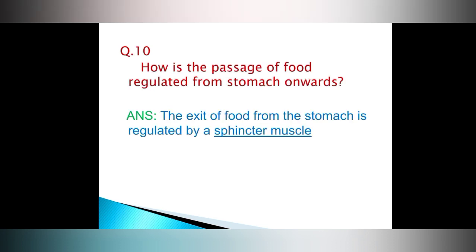Question number 10. How is the passage of food regulated from the stomach onwards? Answer. The exit of food from the stomach is regulated by a sphincter muscle.